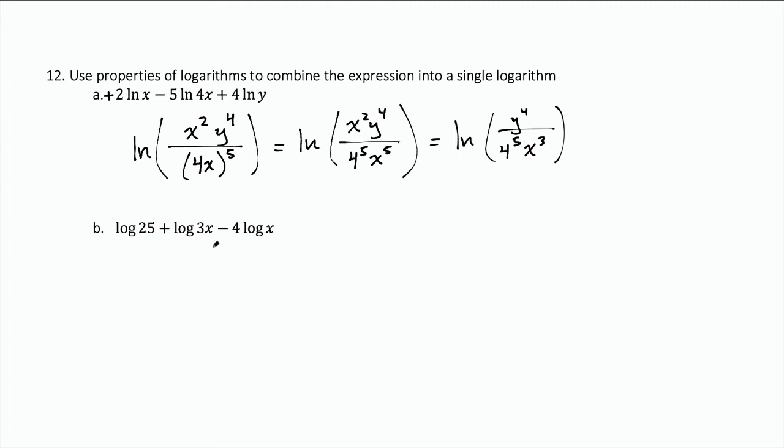For part b, I have three different terms. They're all log, common log. So I know that I can combine these into a single log. Because I'm adding and subtracting, I know I'm going to have a fraction. The positive logarithms give me terms in the numerator. So I have a log of 25. This is like a positive in front. So I have a 25 in the numerator. And I have a positive log of 3x. So I have a 3x in the numerator as well.